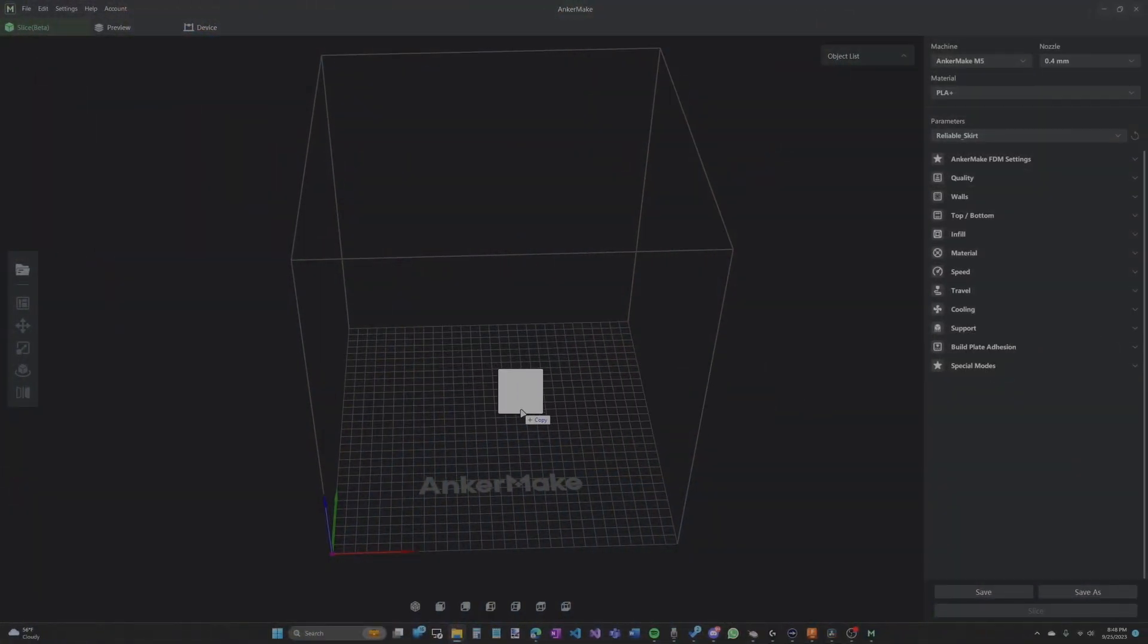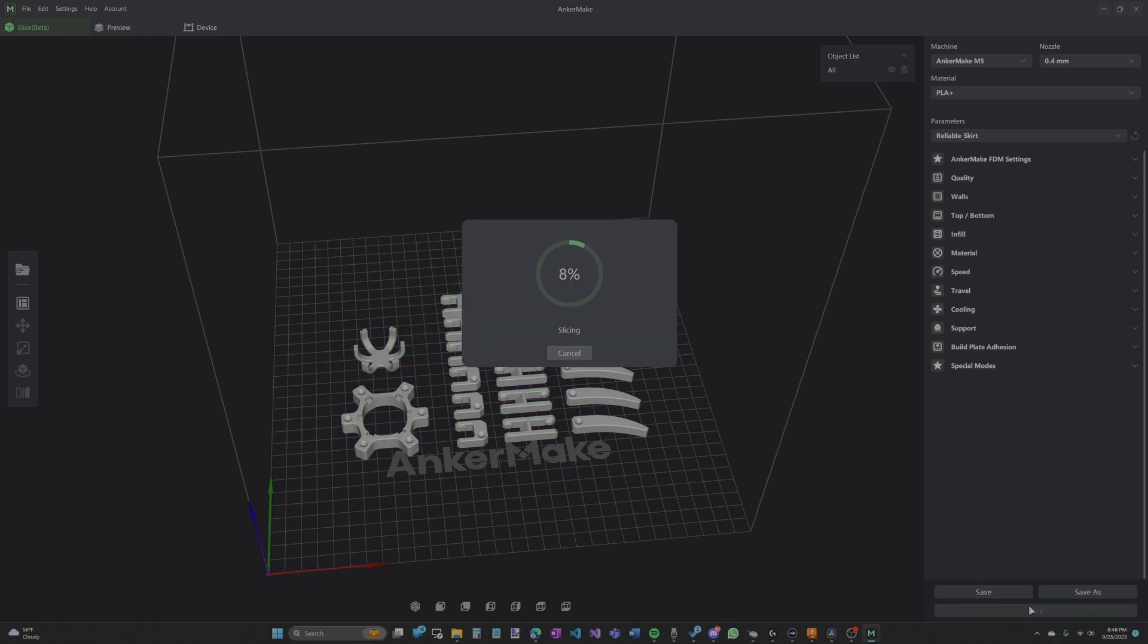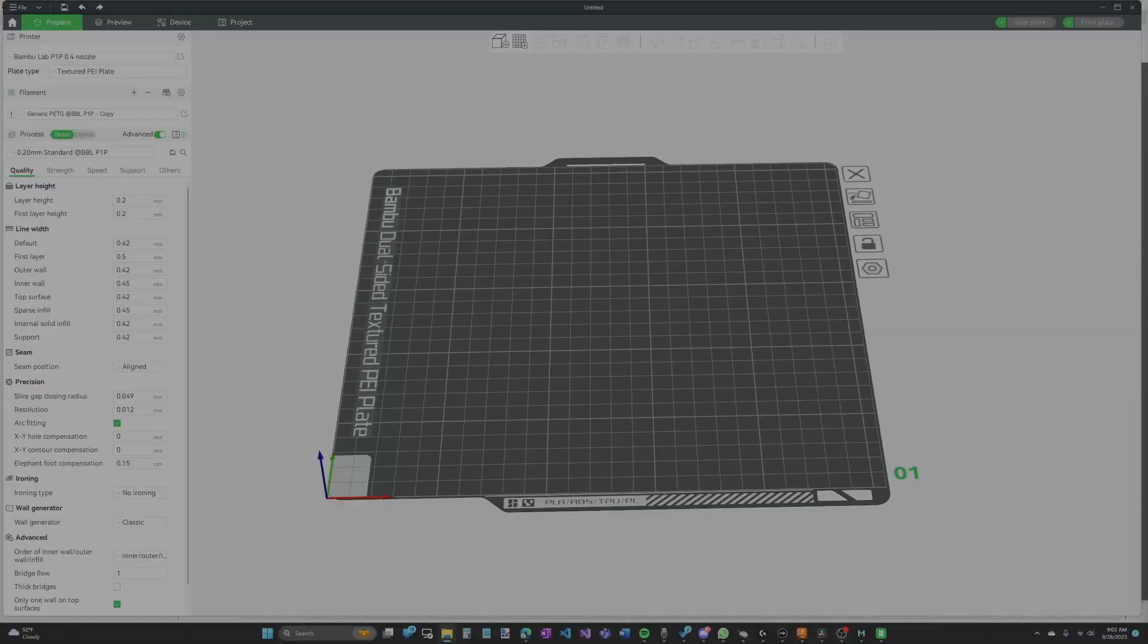With the models finished, it was time to slice and print them. If you're using the STL with all the parts included, just throw it in the slicer and print. If you're manually placing each part in, make sure they're oriented the correct way. The parts are designed to not require any supports, but only if they're on the correct side.